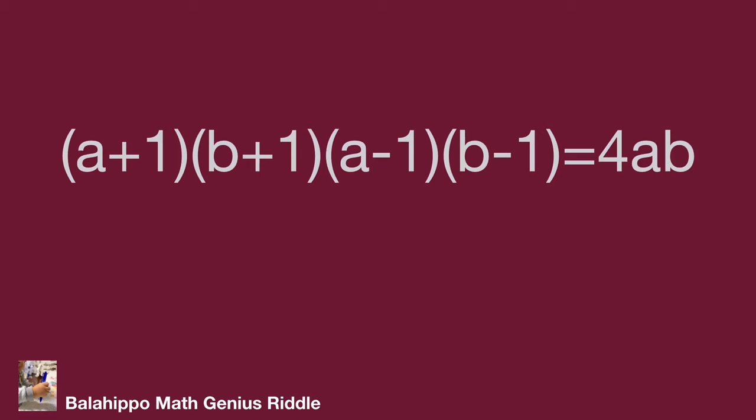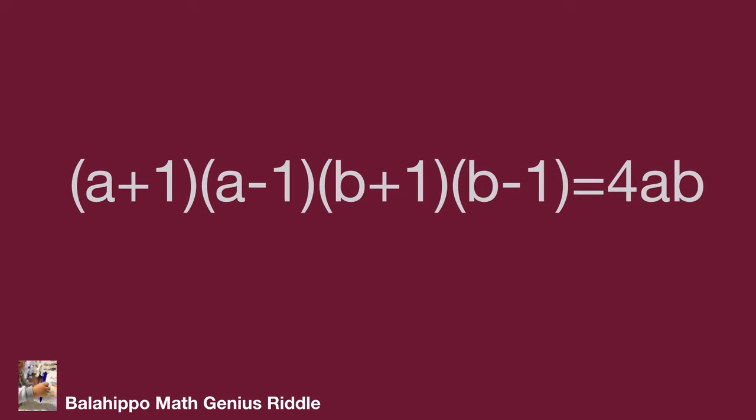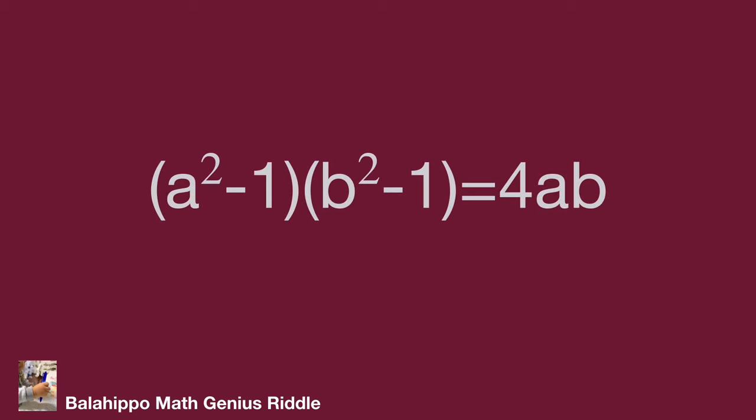The given equation is (a+1)(b+1)(a-1)(b-1) = 4ab. We find (a+1)(a-1) as one group and (b+1)(b-1) as another group. We may simplify by adjusting the quantity sequence as (a+1)(a-1) times (b+1)(b-1) = 4ab. Developing these: (a+1)(a-1) = a²-1 and (b+1)(b-1) = b²-1. So the equation becomes (a²-1)(b²-1) = 4ab.